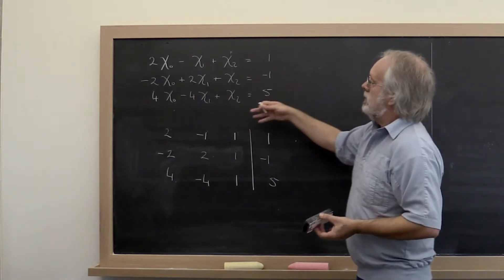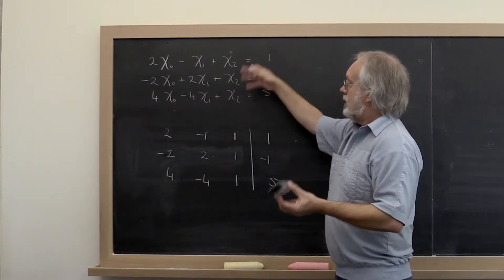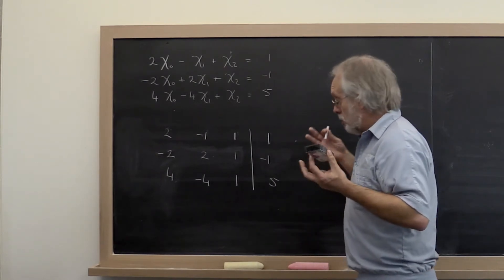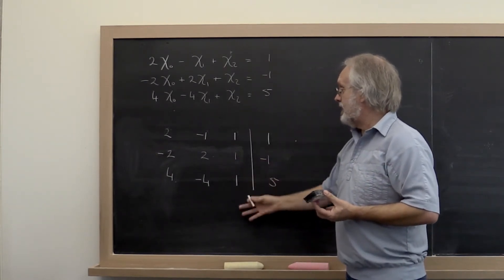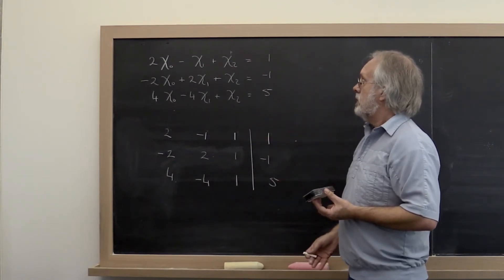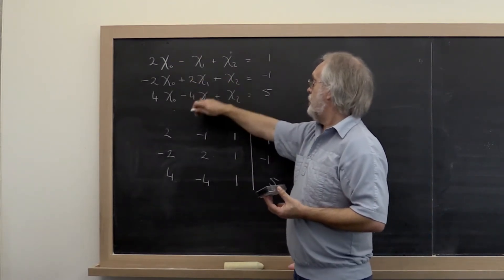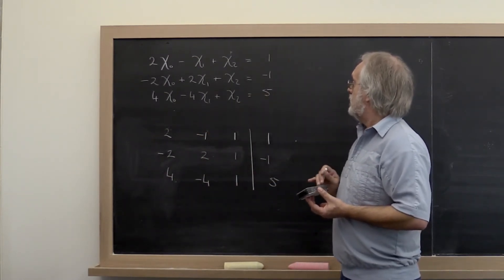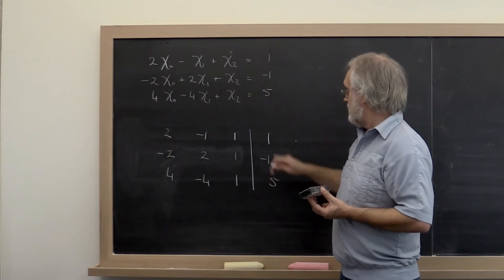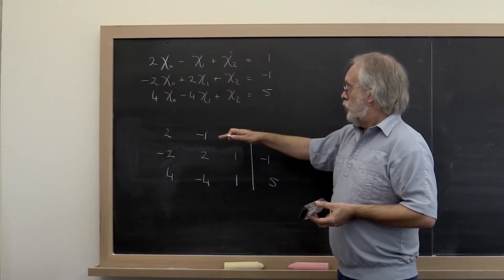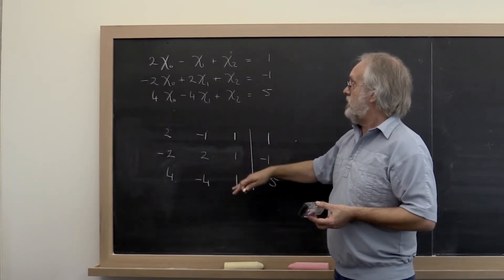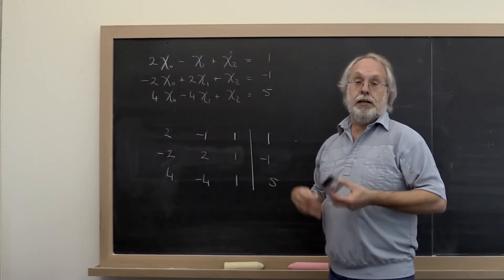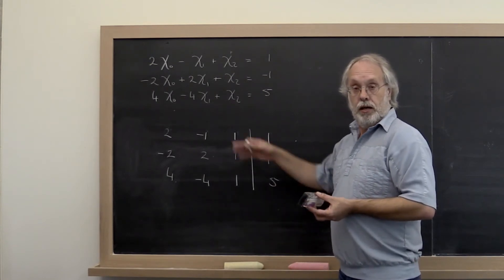Now rather than actually writing down the full equations every time you do a step of this, you were probably taught to instead write down what's known as an augmented system where you just take all of the coefficients that appear on the left and make them into a matrix and then take the values that are on the right and plug them in. And then you perform the exact same operations as you would with the equations, but you only push around and compute with the coefficients.